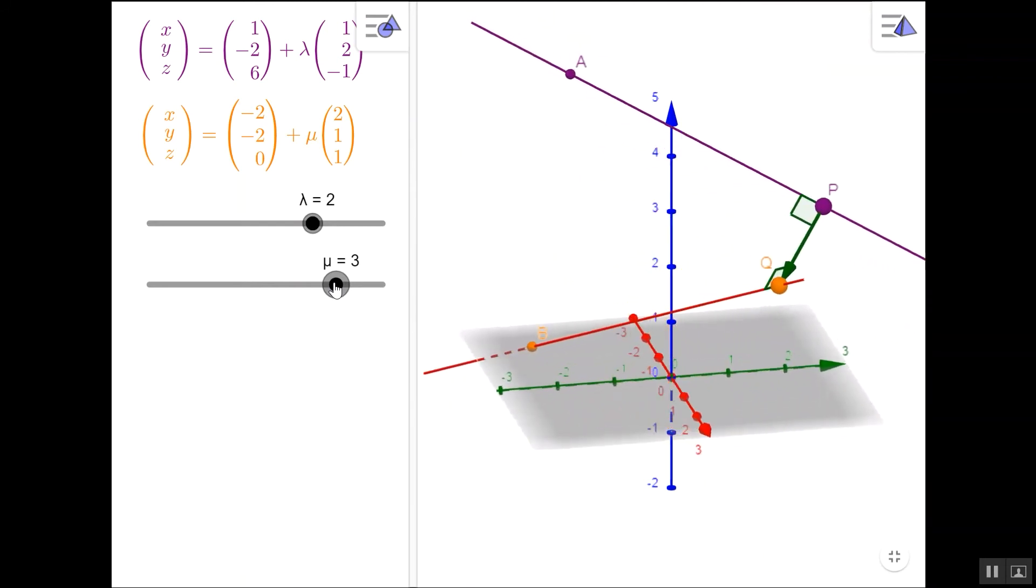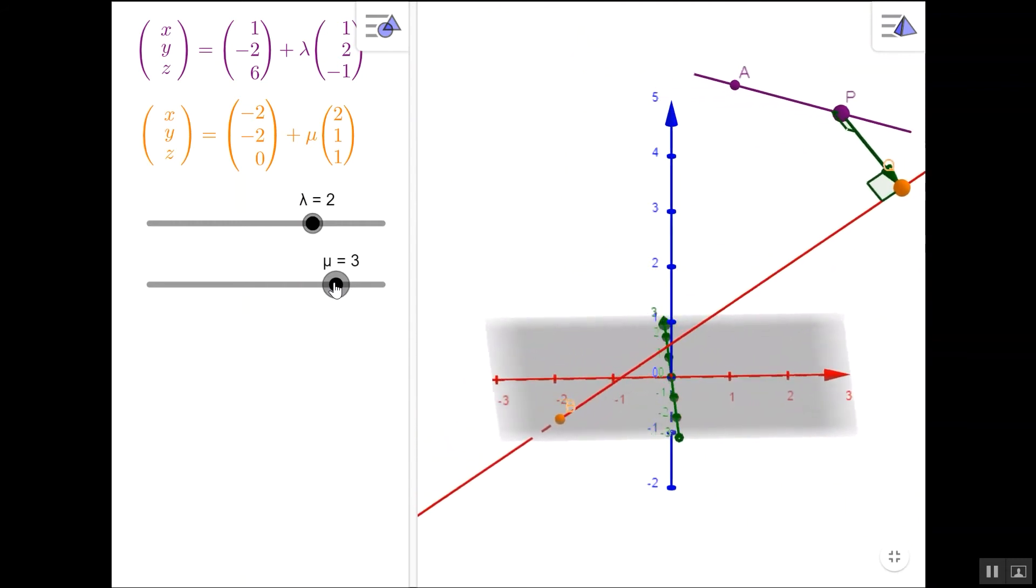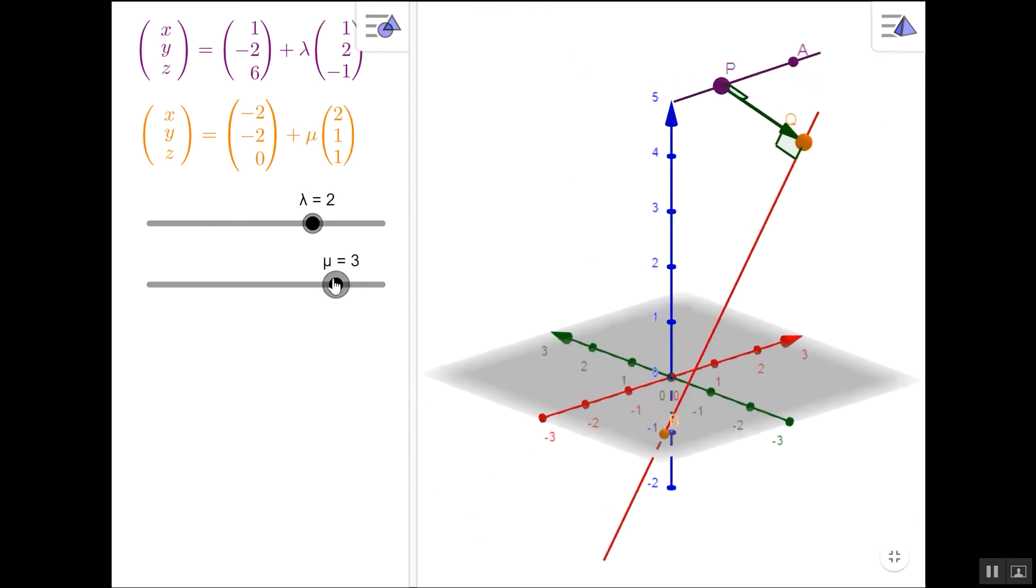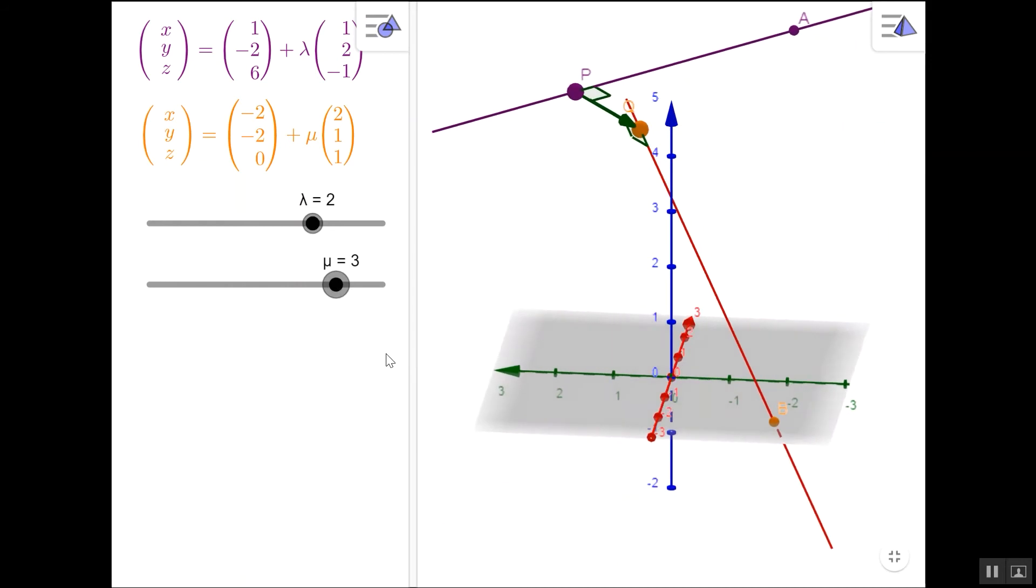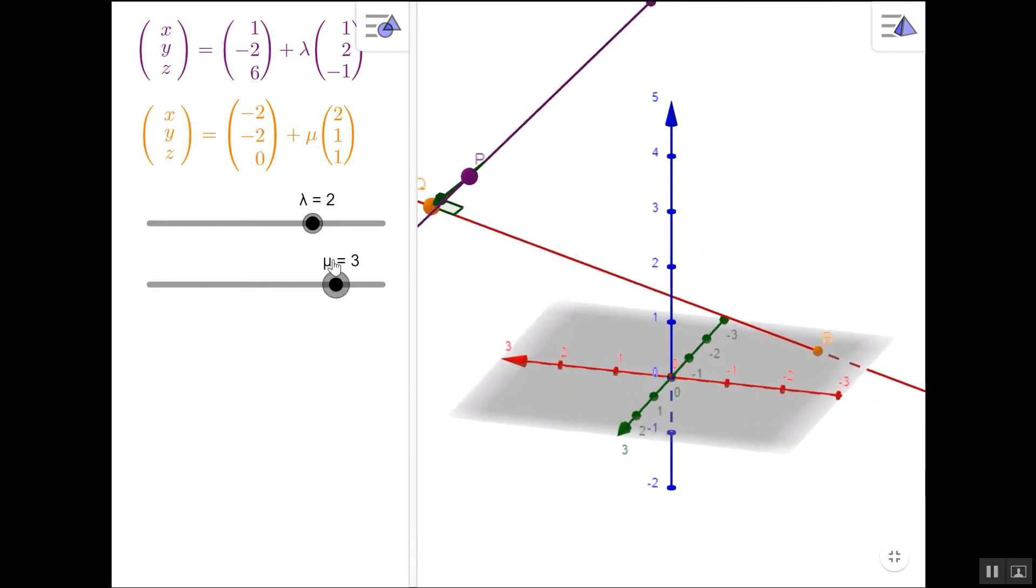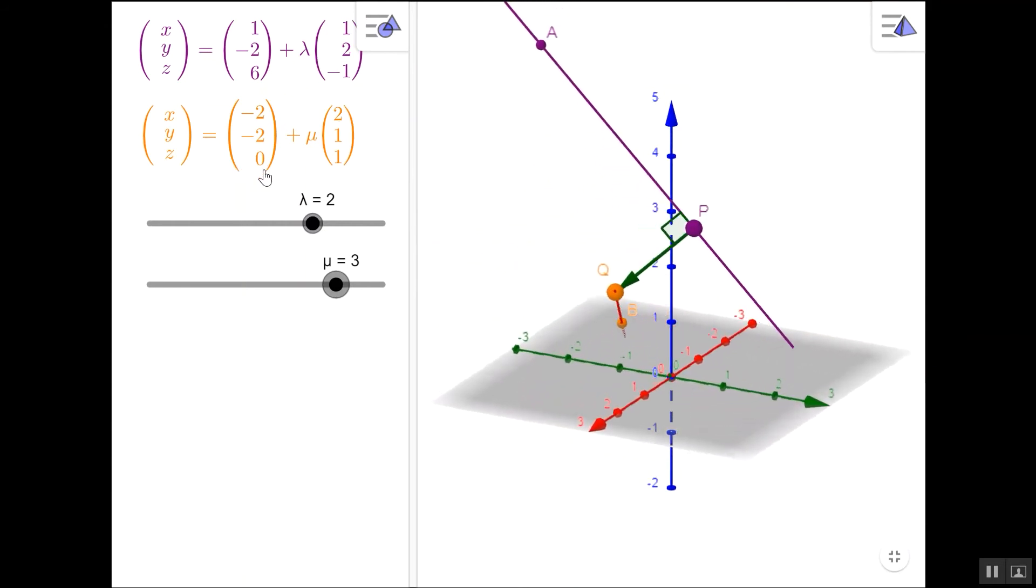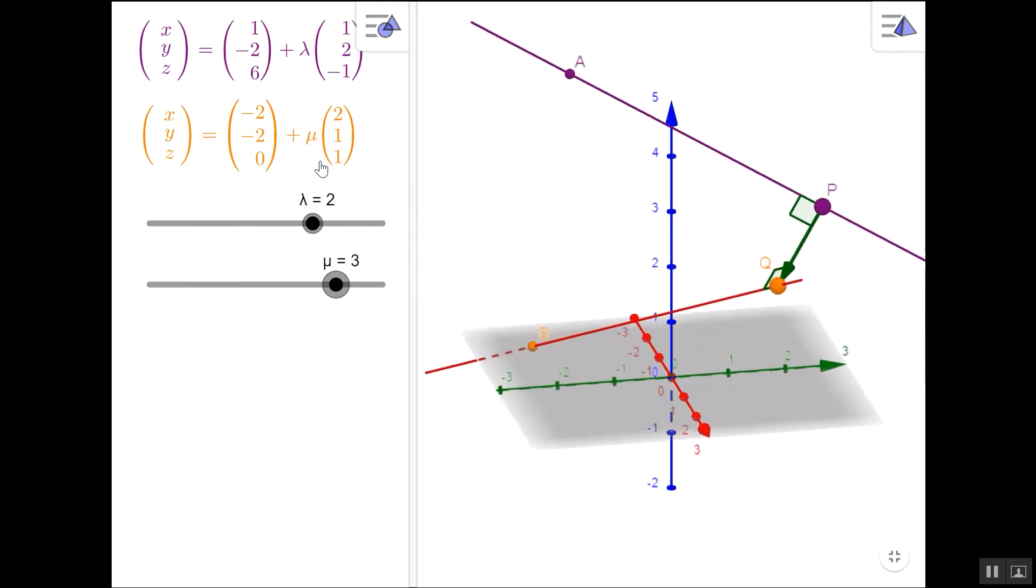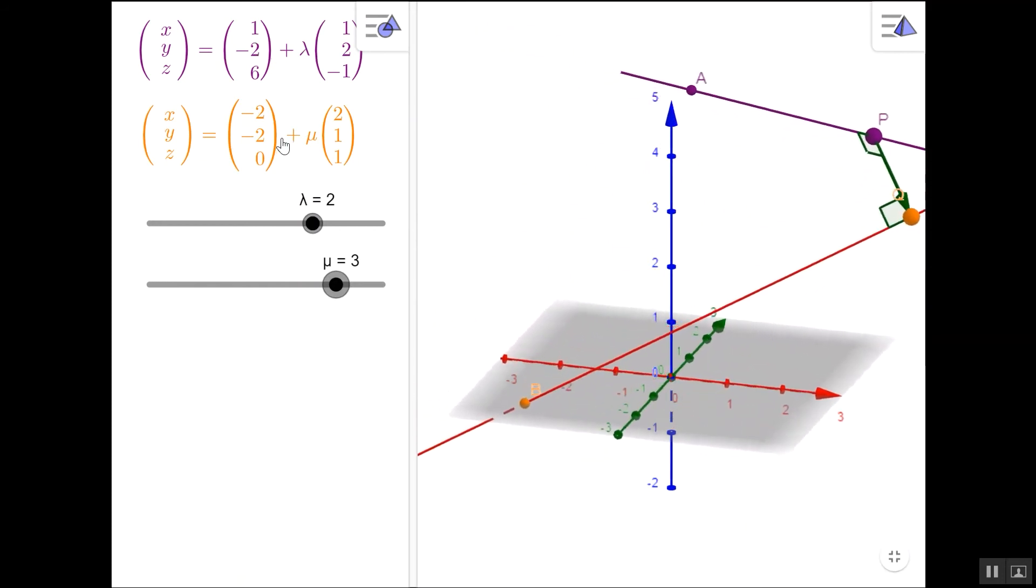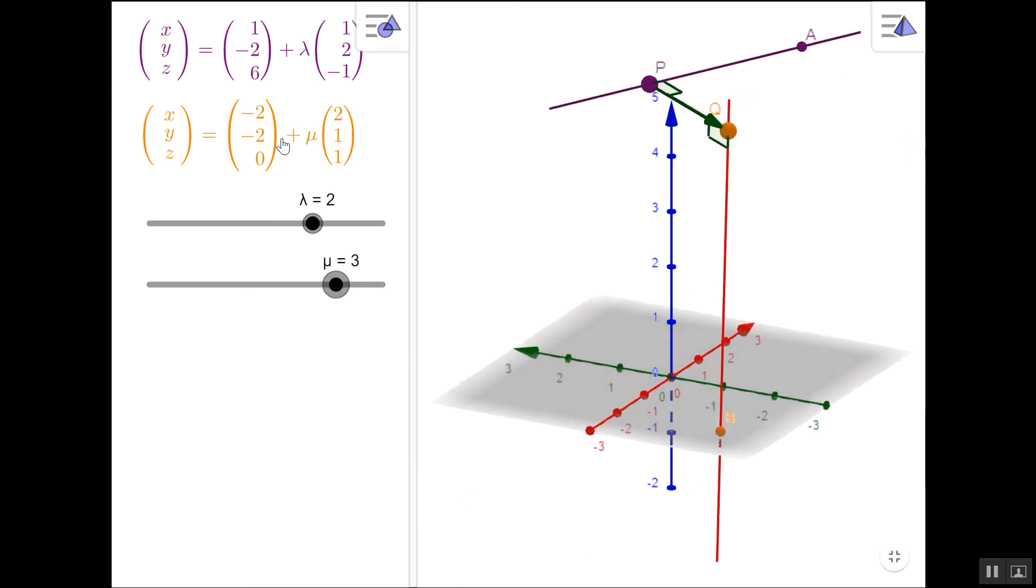The difficulty is I knew those values of Lambda and Mu. In general, you wouldn't know what they were and you'd have to find them. However, that's straightforward, although lengthy method, which is based on knowing that this is my general point P and this is my general point Q. So if I subtract these from each other, I get an expression for the vector PQ in terms of Lambda and Mu.